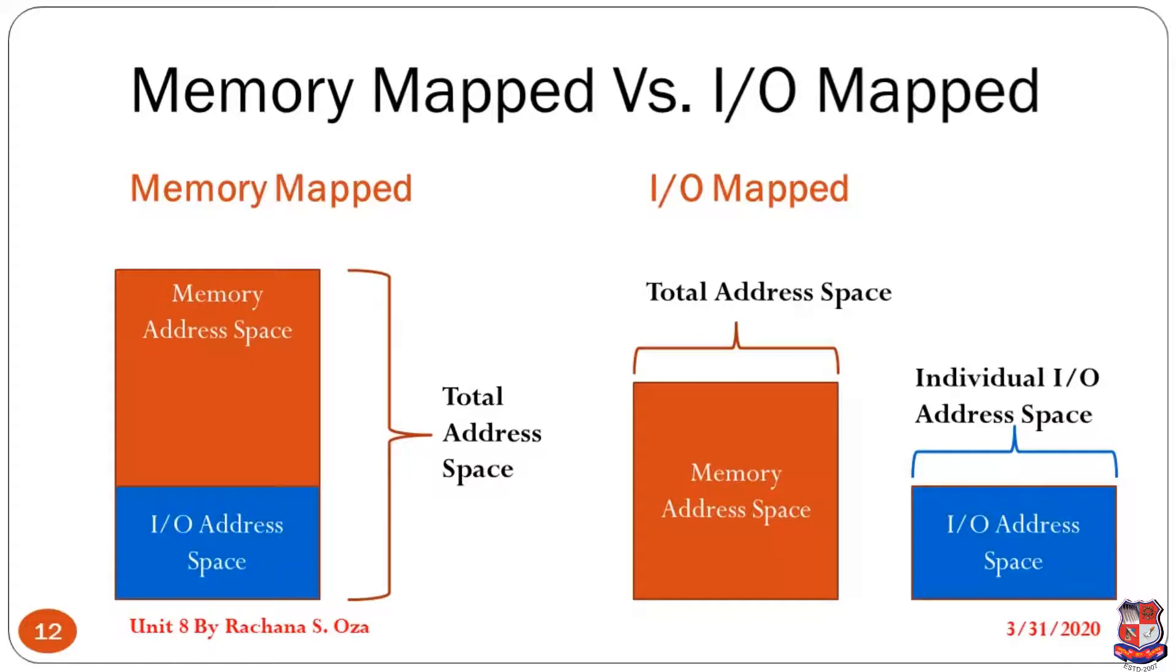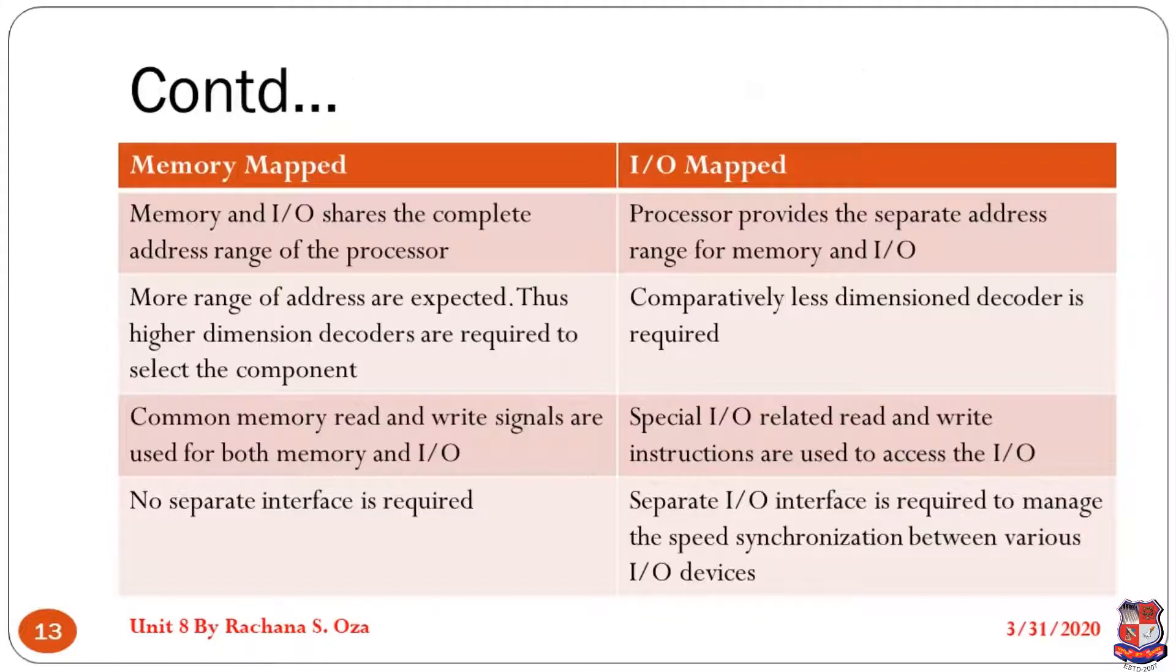Now what are the pros and cons of each of them? I have discussed over here, please go through it. The only point I would like to highlight is the last one: if you have total address space divided into two-to-one ratio in a memory-mapped system, then there is no need of interface. But if you want to have a separate I/O space-mapped I/O devices, then the separate I/O interface is required.